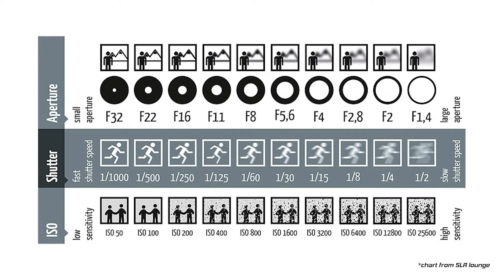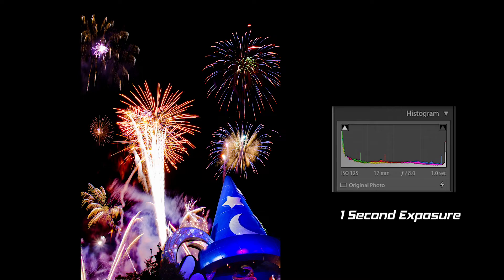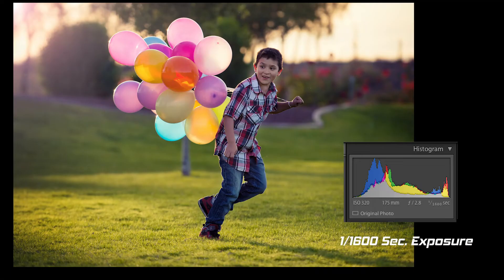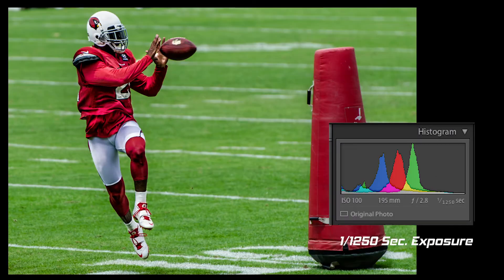Shutter speed is the amount of time your shutter is open to let light in. The bigger the number — one over four-thousandths is a really quick shutter speed, whereas 30 seconds is a very slow shutter speed, taking 30 seconds for all that light to come in. Think of light painting or astrophotography — that's where you use those really slow shutter speeds. Whereas if you're taking pictures of kids or doing sports photography, that's where you want those really fast shutter speeds.